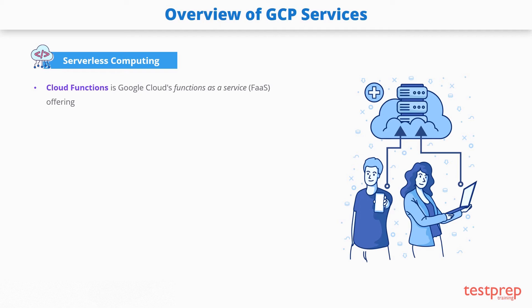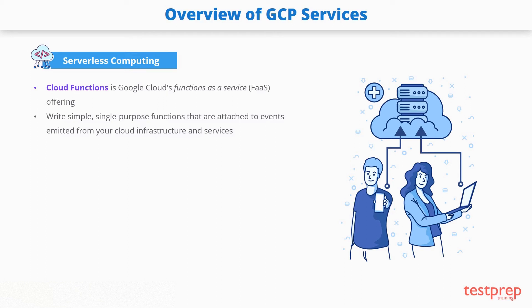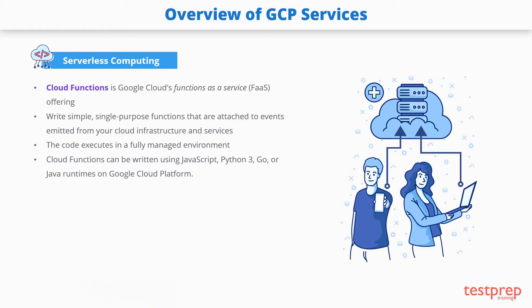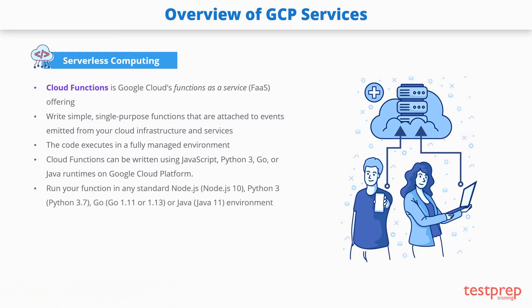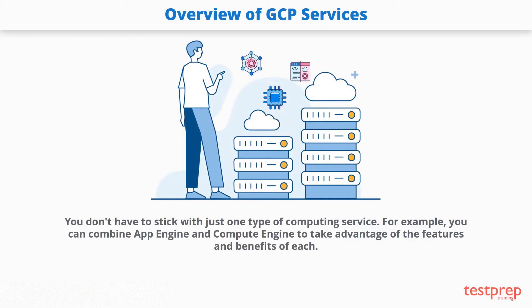Google Cloud's serverless computing offering is known as Cloud Functions — Google Cloud's functions as a service offering — providing a serverless execution environment for building and connecting cloud services. You write simple, single-purpose functions attached to events emitted from your cloud infrastructure and services; your function is triggered when a watched event fires. Your code executes in a fully managed environment with no need to provision infrastructure or manage servers. Cloud Functions can be written using JavaScript, Python 3, Go, or Java runtimes. You can also combine App Engine and Compute Engine to take advantage of the features and benefits of each.